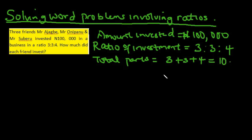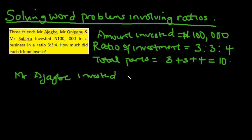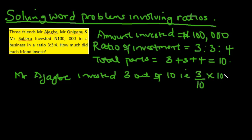The total number of parts is 3 plus 3 plus 4, which equals 10. So we have 10 parts in total. That means Mr. Ajakbe invested 3 out of 10, which is 3 over 10 of one hundred thousand naira. The zeros cancel and we get thirty thousand naira — so Mr. Ajakbe invested thirty thousand naira.